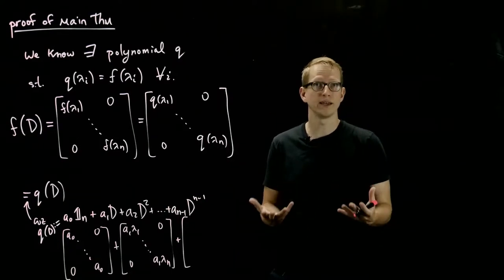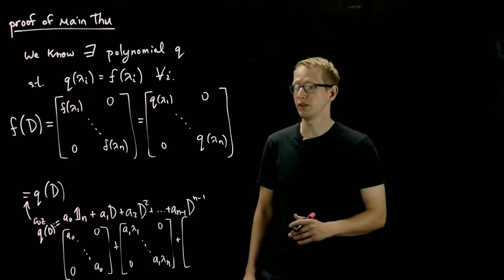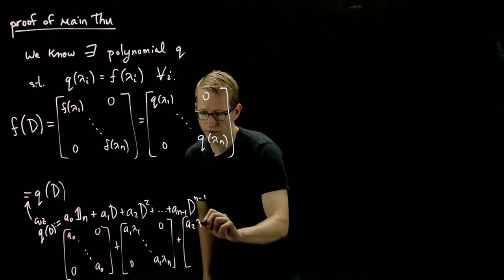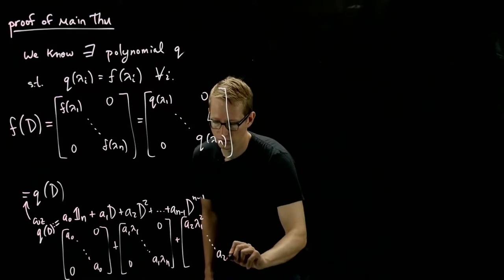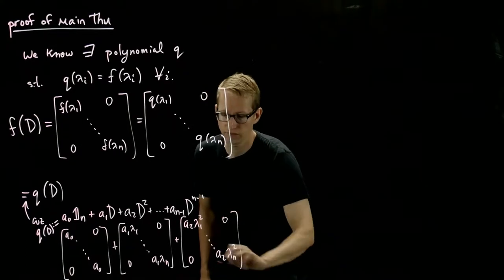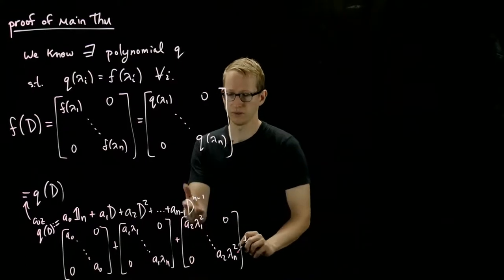And then here we have plus A2 D squared. Now, D squared, since D is the diagonal matrix, is just lambda i squared in each of the diagonal terms. So it's A2 lambda 1 squared all the way down to A2 lambda n squared. And similarly for all of the other terms up until this last one.